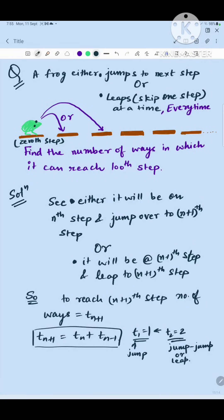So it's a beautiful problem which is related to Fibonacci. There is a frog and it's standing on the 0th step. So this is 0th step, 1st, 2nd, 3rd, 4th, 5th and so on.